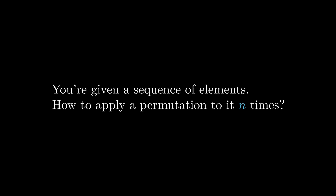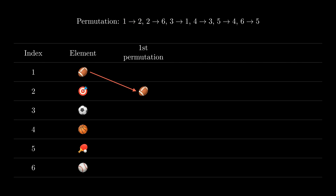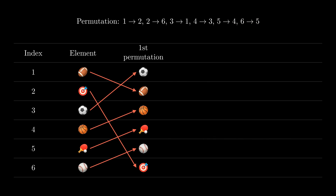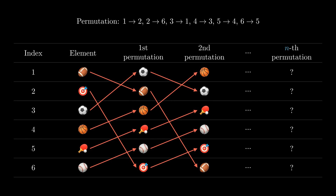This is all we will talk about binary exponentiation. Before the video ends, I will leave you a problem to think about. Given a sequence and a permutation, how to repeat the permutation n times? Here, we have a sequence with six elements and a permutation that moves element 1 to position 2, element 2 to position 6, and so on. This is one permutation. With the same procedure, we can finish the second permutation. What would the sequence look like if we repeat this permutation n times? You can think about how to solve this problem with binary exponentiation.